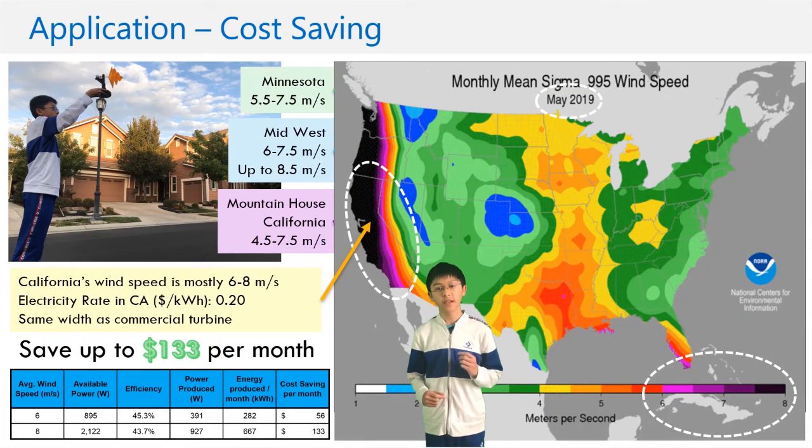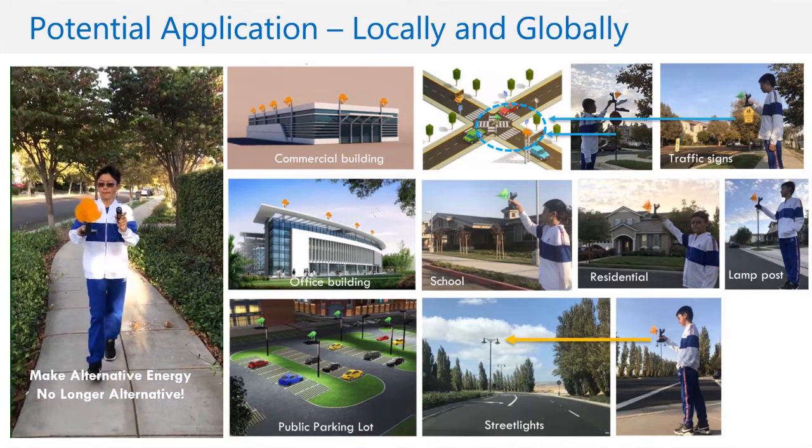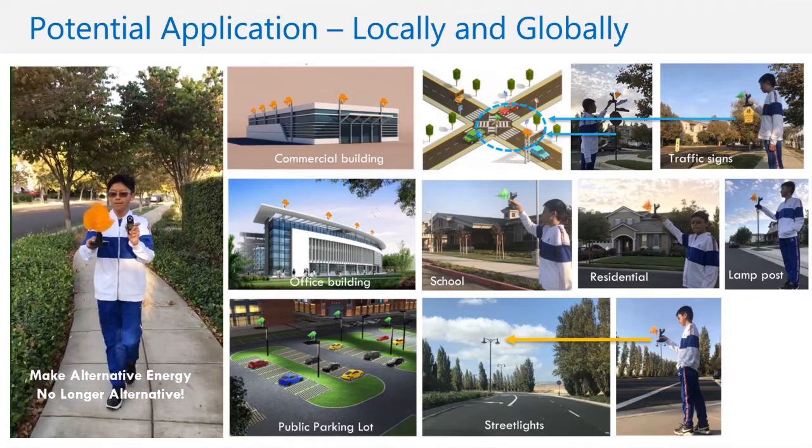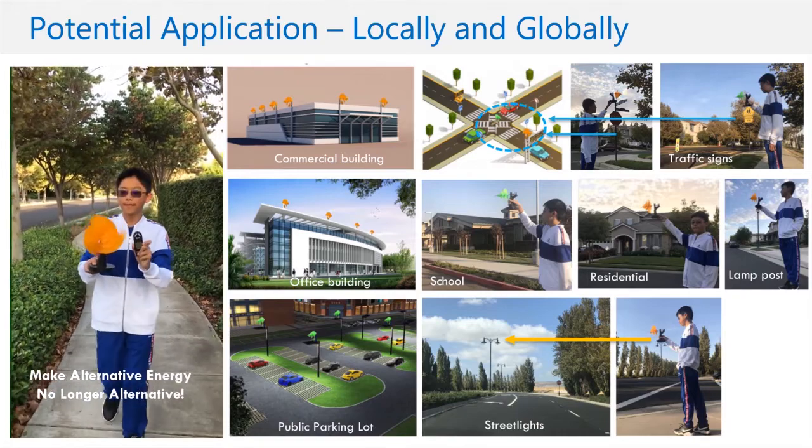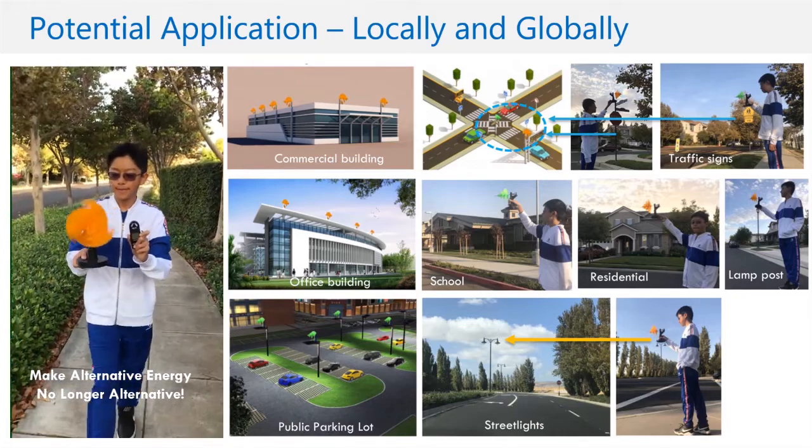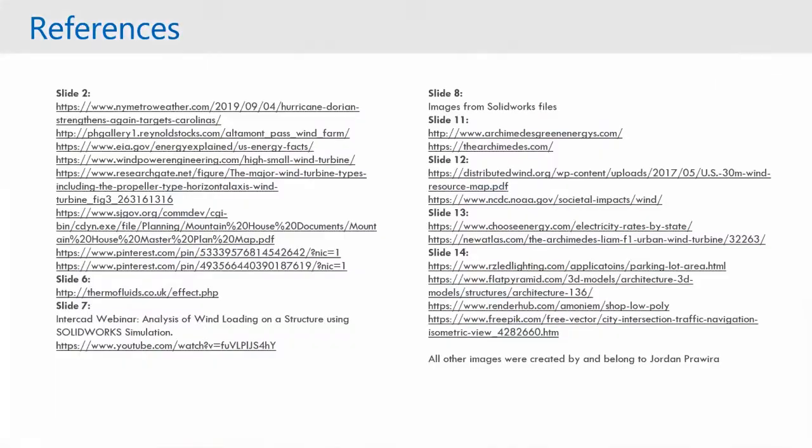So where can my turbine be deployed locally and globally? In California, we can save up to $133 per month. Ideal locations for my wind turbine are in urban and suburban settings. So with my logarithmic wind turbine, we can make alternative energy no longer alternative. Thank you.